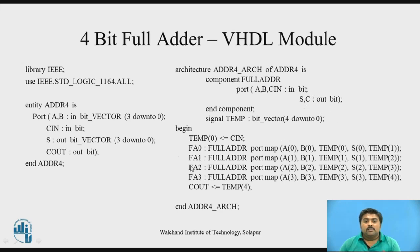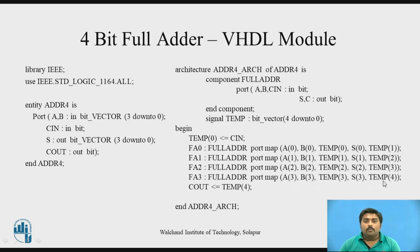Similarly, second component instantiation FA1, full_adder, port map — with signals A(1) and B(1). The output carry generated from the previous component instantiation is used as the input carry to the second component instantiation. It then generates S(1) and temp(2). The same pattern continues for the third and fourth component instantiations. At the final stage, the outputs are S(3) and temp(4), where temp(4) is nothing but the final Cout. So Cout <= temp(4). Then 'end architecture'.